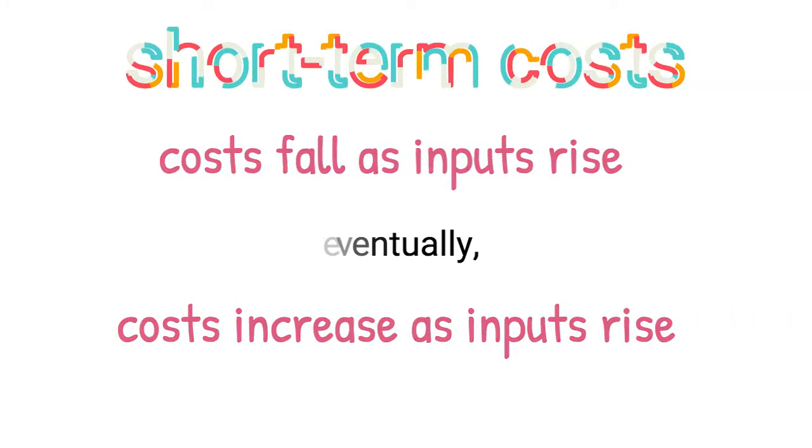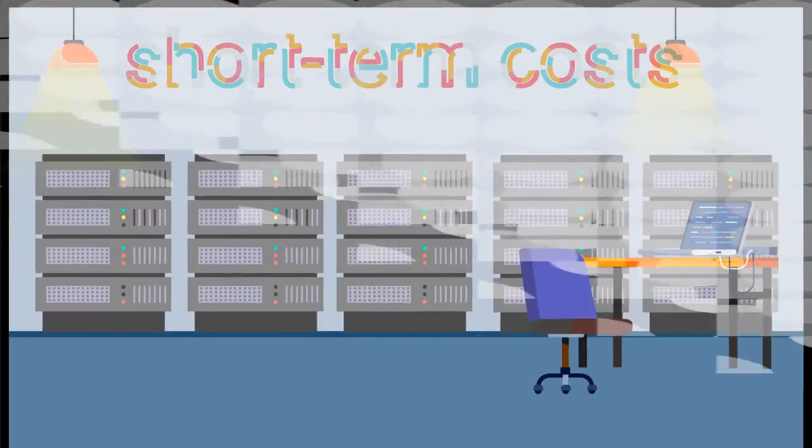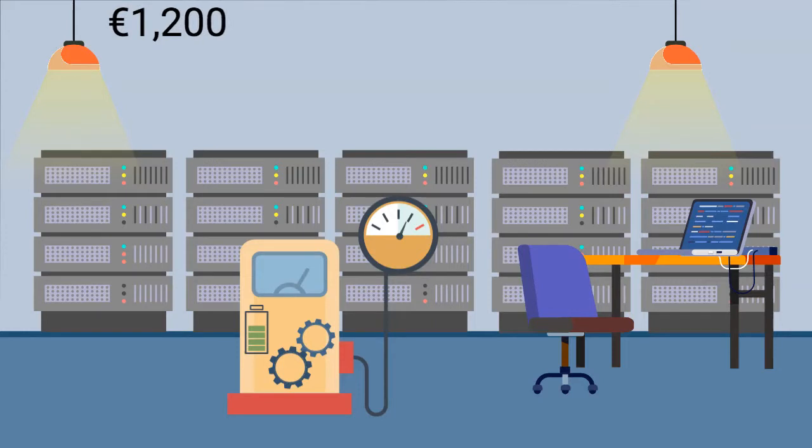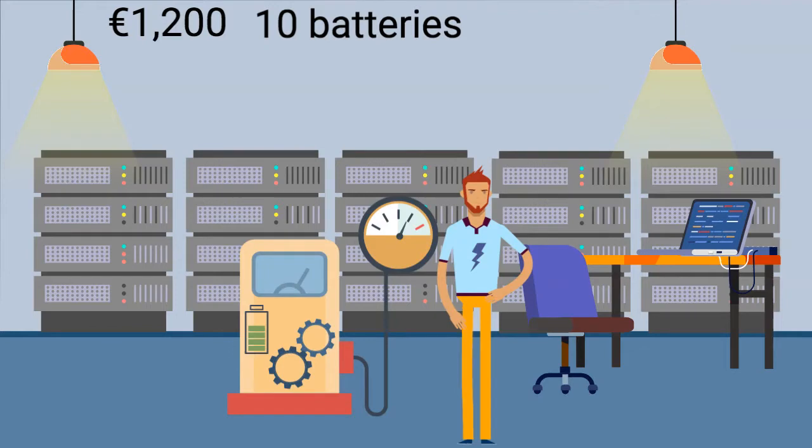We're going to see this with an example. Suppose that the business buys a new machine to produce batteries. This machine costs €1,200. The business then hires a worker. This worker produces 10 batteries during his 8-hour shift. As a result, the cost of the machine for one day is spread among 10 units of output. The cost per unit of output is, therefore, €120.